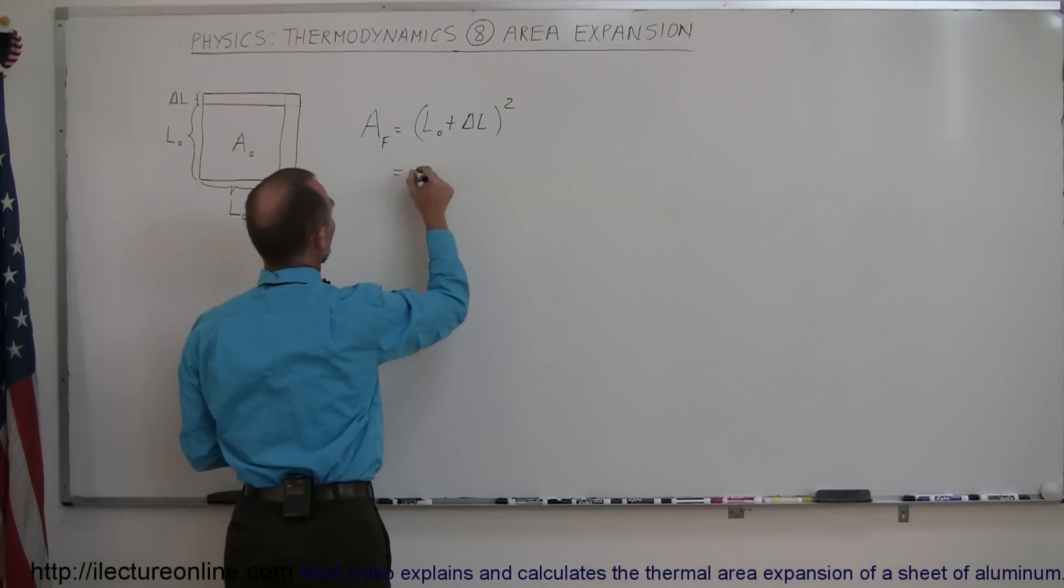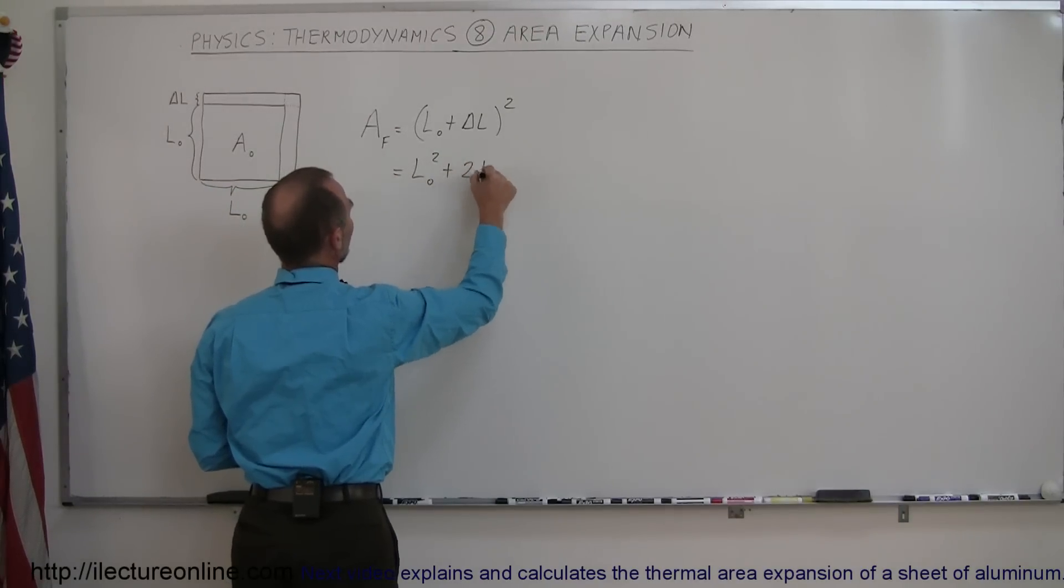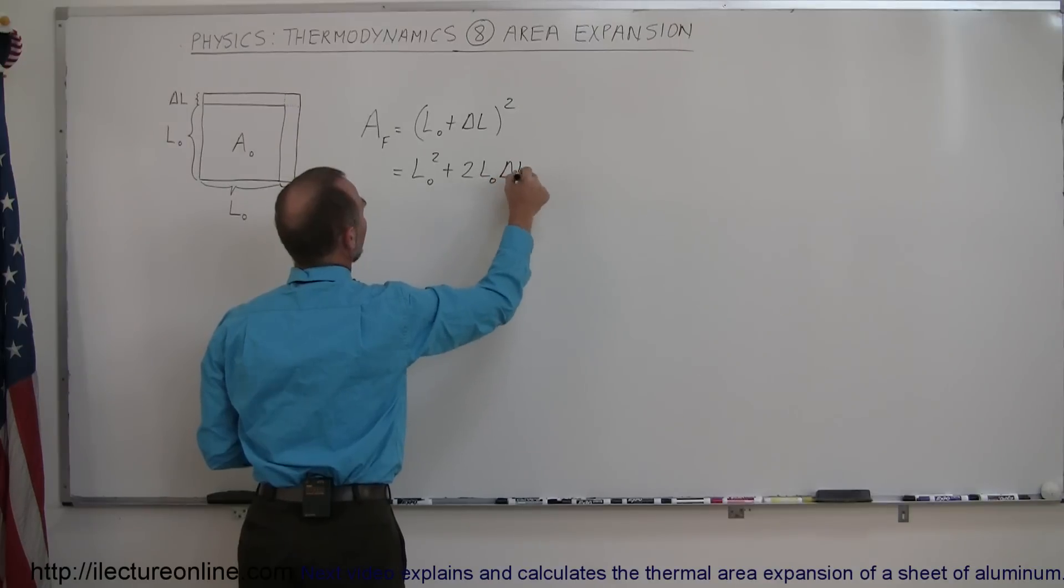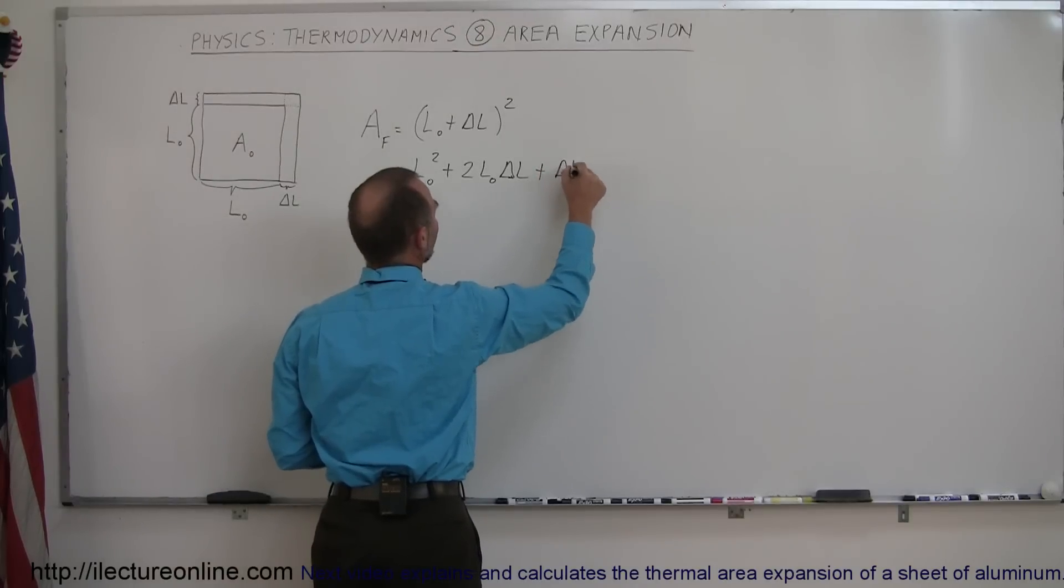So this is the first term squared, plus twice the product of the two, two L sub nought delta L, times the last term squared, so plus delta L squared.